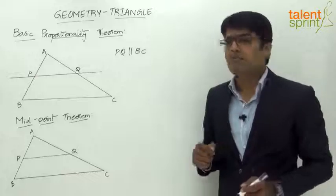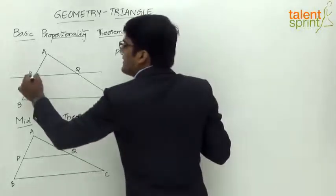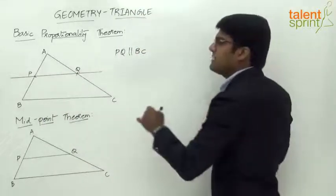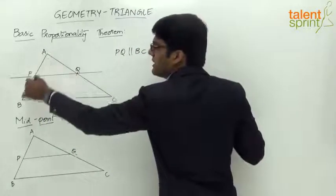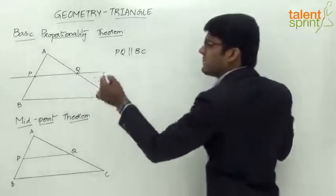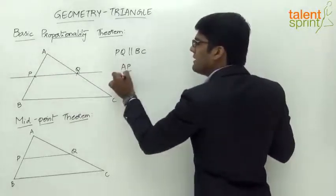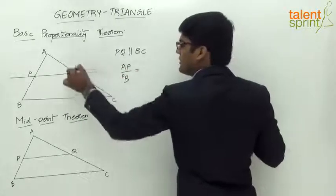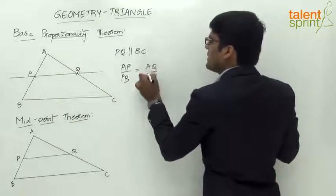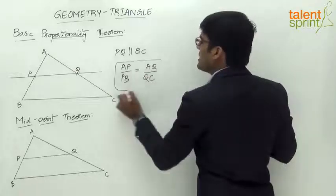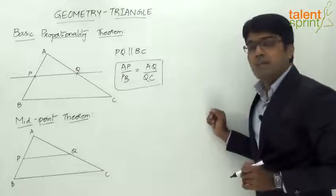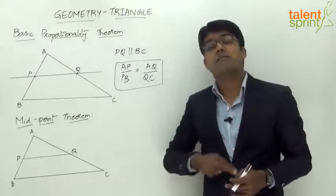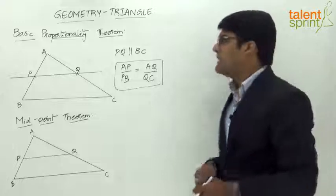The line PQ meets AB at point P and AC at point Q. As per the Basic Proportionality Theorem, the ratio in which the two sides get divided is the same, so we can say AP/PB = AQ/QC. The simple point is: draw a line parallel to one of the sides of the triangle, and it will divide the other two sides in the same proportion.